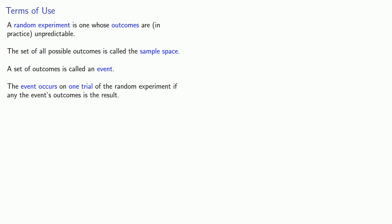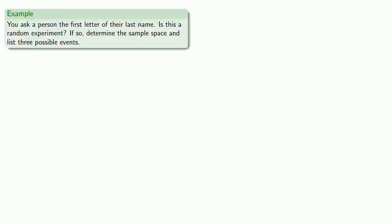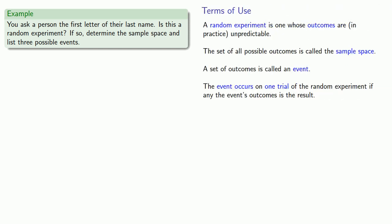Now that's a lot of ideas to drop in one paragraph, so let's take a look at what they mean. Let's say you ask a person the first letter of their last name. Is this a random experiment? And if it is, let's determine the sample space and three possible events. So I'll pull in our collection of definitions. The first thing to check is to determine whether our outcomes are, in practice, unpredictable.